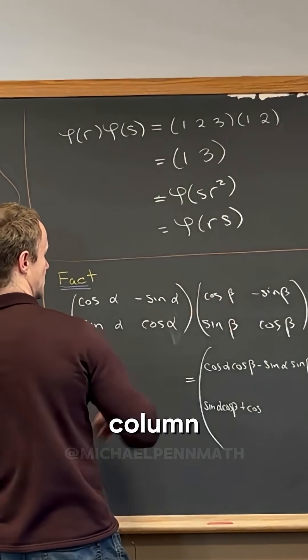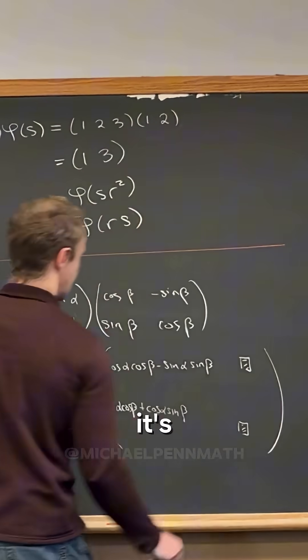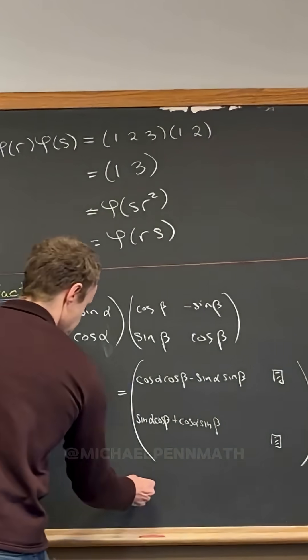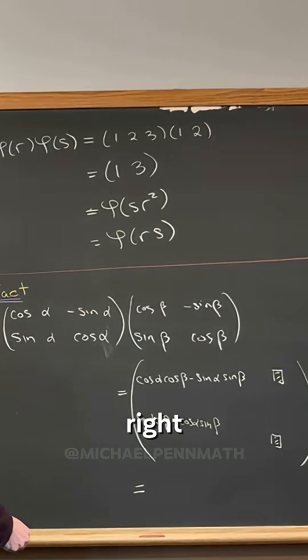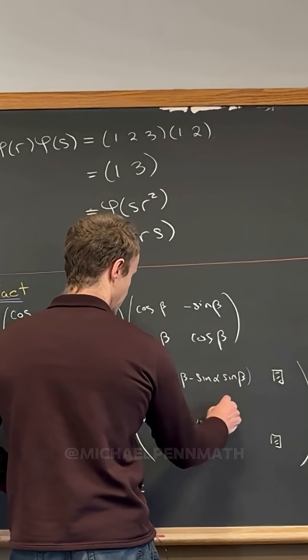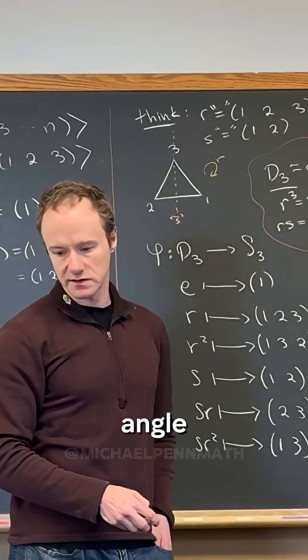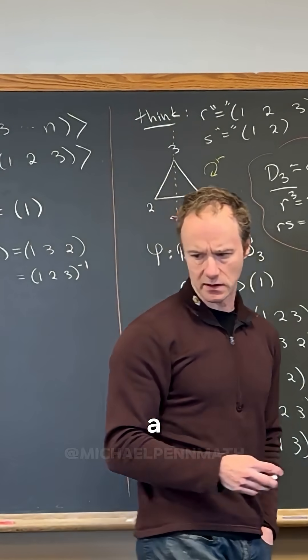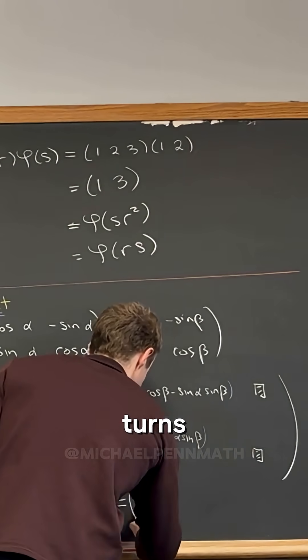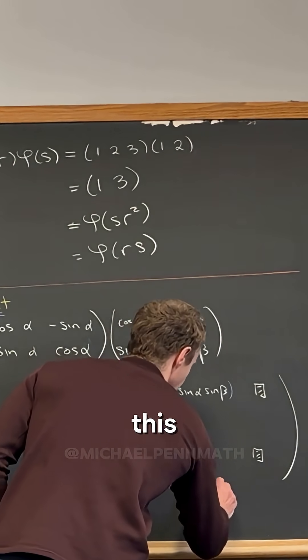But then these things right here might look kind of familiar, like angle sum formulas. Those are angle sum formulas, like I said, from a pre-calculus type class. This turns out into the cosine of alpha plus beta, and then this will be minus sine of alpha plus beta.